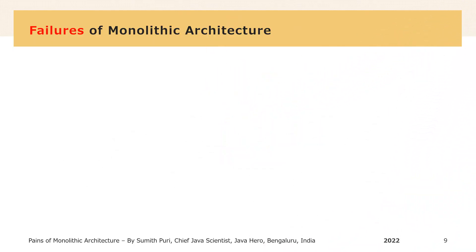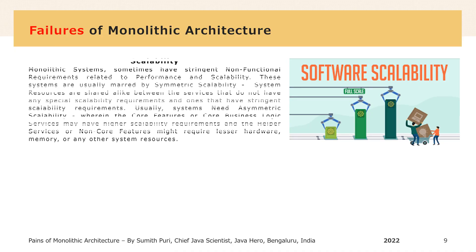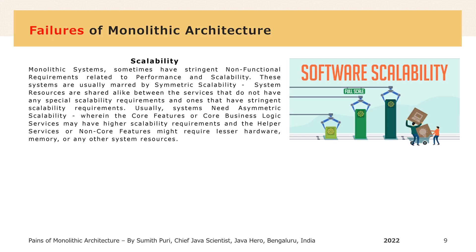Software systems sometimes have stringent non-functional requirements related to performance and scalability. These systems are usually marred by symmetric scalability — that is, system resources are shared alike between services that do not have any special scalability requirements and ones that have stringent scalability requirements. Usually, systems need asymmetric scalability, wherein core business logic services may have higher scalability requirements and helper or non-core features might require lesser hardware, memory, or other system resources.